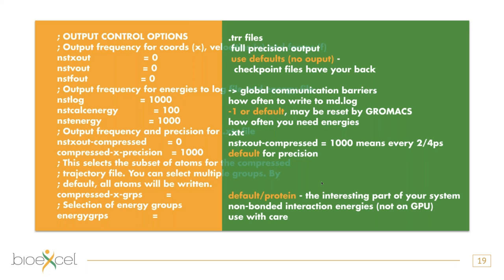For the compressed X groups, you want to specify the protein or the part of the system you're interested in — something to think about before starting a long simulation that might give you no usable data. There's another thing for reruns especially: energy groups, where you have non-bonded interaction energies output. You can't have this output on the GPU, but you can create a trajectory on a GPU, use the MD run minus rerun option, and then look into energy group behavior. Use the output with care because energy groups don't account for long-range non-bonded interactions via PME.